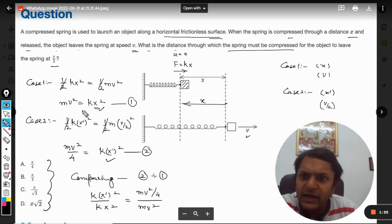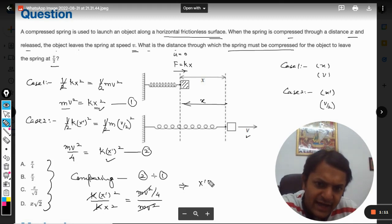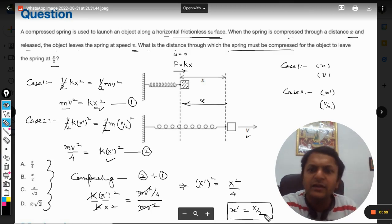mv² and mv² get canceled, k and k get canceled, so we have only 4 here now. So (x')² = x²/4, therefore x' = x/2.